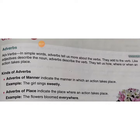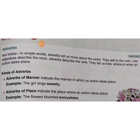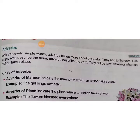Like adjectives describe the noun and pronoun, similarly adverbs describe the verb. They add to the verb and give us all definite information about the verb — voh verb ke saath jodh karke verb ke baare mein batata hai. They tell us how, where, or when an action takes place — voh kab, kahan, aur kaisa kiya gaya.